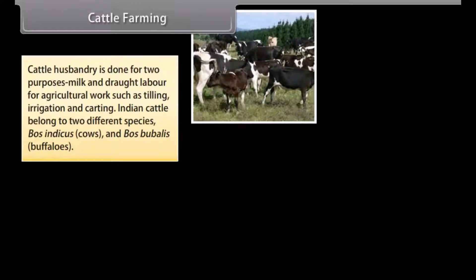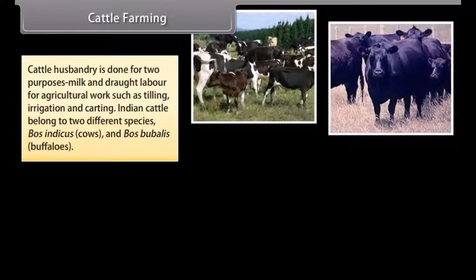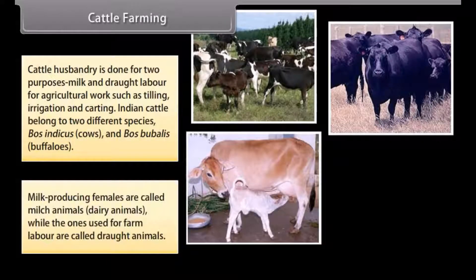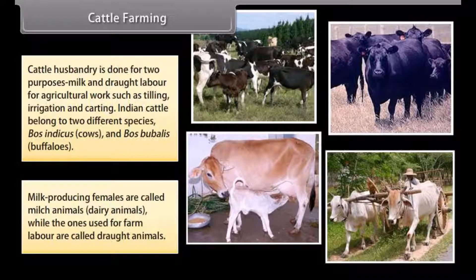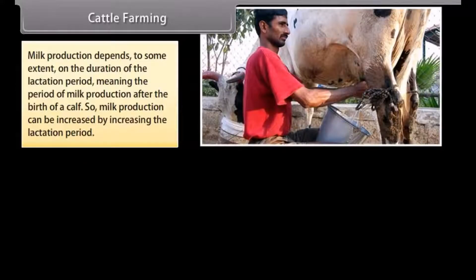Indian cattle belong to two different species: Bos indicus (cows) and Bos bubalis (buffaloes). Milk-producing females are called dairy animals, while those used for farm labor are called draught animals. Milk production depends on the duration of the lactation period — the period of milk production after the birth of a calf — so milk production can be increased by increasing the lactation period.